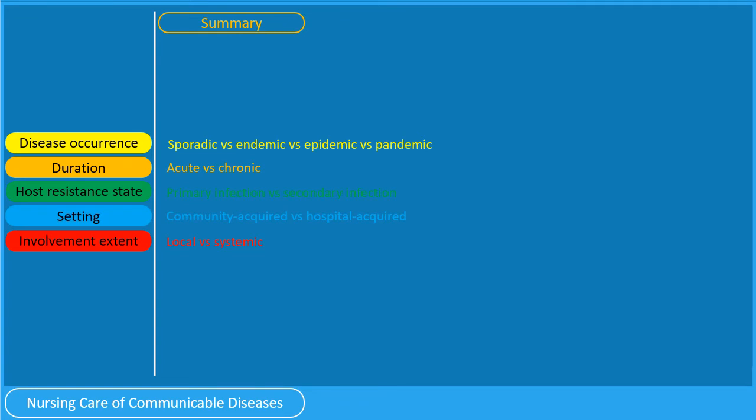Let us summarize. As to disease occurrence, a disease may be sporadic, endemic, epidemic, or pandemic. As to duration, it may be acute or chronic. As to state of host resistance, it may be a primary or secondary infection. As to setting, it may be community or hospital acquired. And as to extent of involvement, it may be local or systemic.